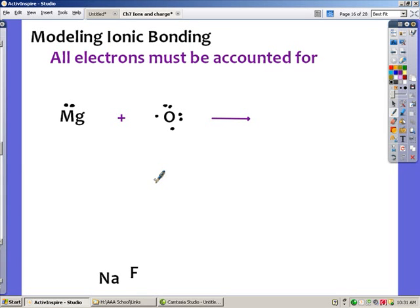Here, magnesium isn't going to just transfer one electron over to this oxygen. It's going to transfer both of its electrons over to the oxygen, and oxygen just happens to have enough room to take on both electrons.